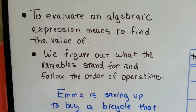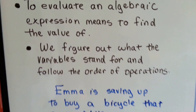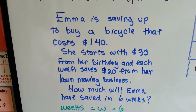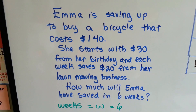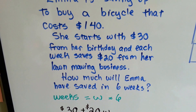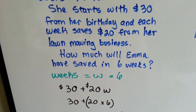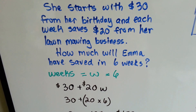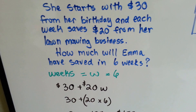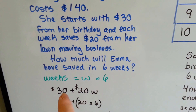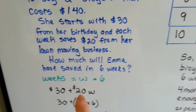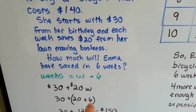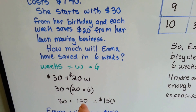We figure out what the variables stand for and follow the order of operations. Emma is saving up to buy a bicycle that costs $140. She starts with $30 from her birthday and each week saves $20 from her lawn mowing business. How much will Emma have saved in 6 weeks? Weeks is going to equal W — a good variable for weeks — and W equals 6. We're going to do $30 of her birthday money plus $20 for each week, so that's multiplication: 30 plus 20 times W.